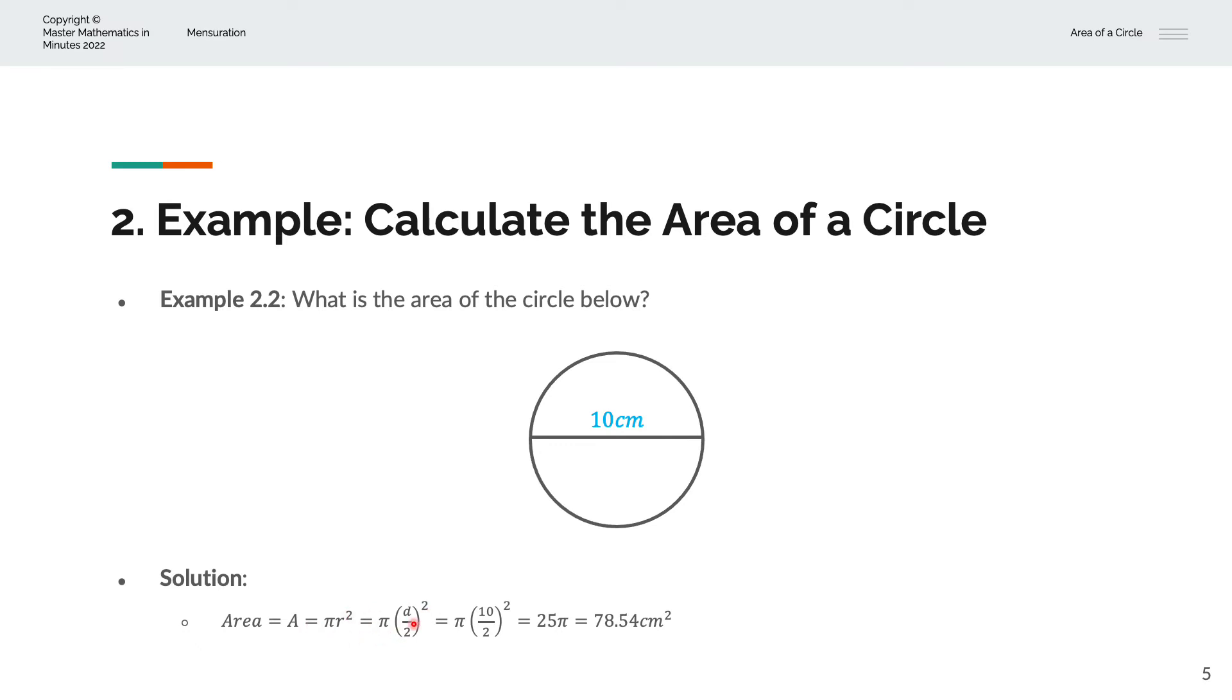And so we have d equals 10 from above. We'll copy the π over and we'll square 10 divided by 2. And that simplifies to 25π or 78.54 centimeters squared.